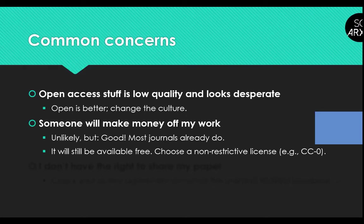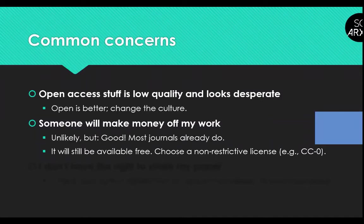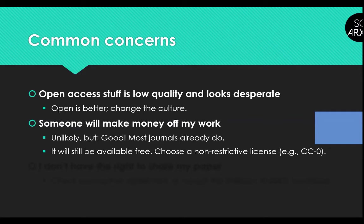There is also a concern that someone will make money off your work if you share it publicly. This is actually quite unlikely. However, if it does happen, that's okay — if you're planning to submit to a for-profit journal, you're already making money for somebody else and not yourself. If you post a paper with a non-restrictive license and somebody takes it and uses it in a book, that's not hurting you because it's not money you would have made anyway, and the paper is still available for free. We do recommend using a non-restrictive license like a CC0 license, and policing the use of our work through professional norms rather than through law.